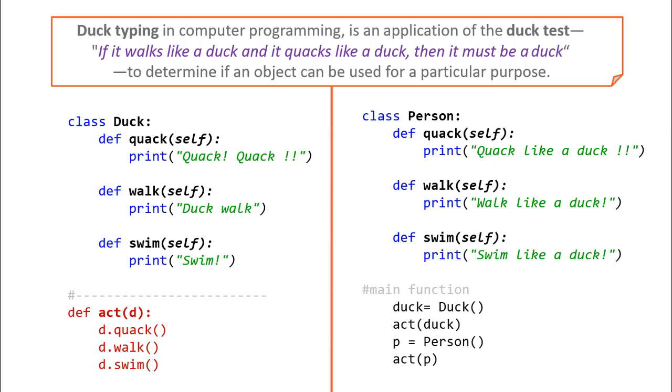This is to determine if an object can be used for a particular purpose. Note that there is no relationship between person and duck, yet they are perfectly replaceable without any error. This is possible in scripting languages like Python and JavaScript.